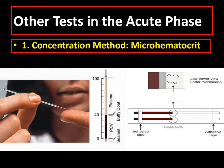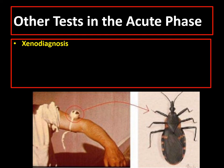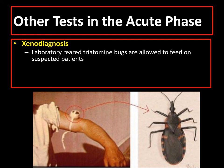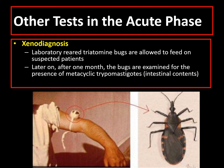Other tests that might be performed include the microhematocrit concentration method, especially if the parasitic burden is low. Another test is xenodiagnosis, which is not commonly done nowadays, wherein laboratory-grown triatomine bugs are allowed to feed on suspected patients, and after one month, the bug is dissected and examined for the presence of parasites in the gut.